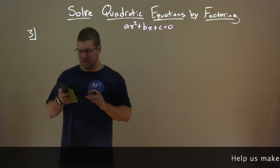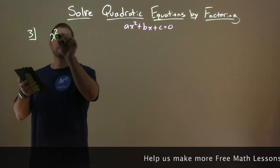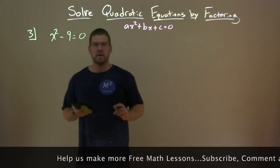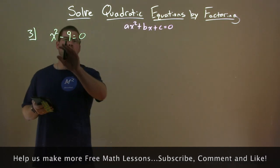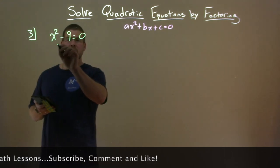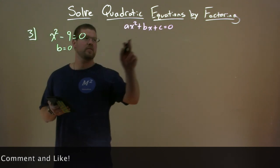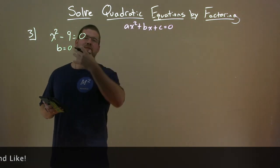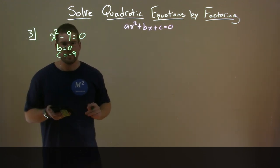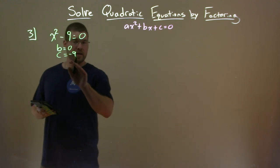Let's solve another one using the zero product property. We have x squared minus 9 equals zero. What's tricky here is the b value isn't written — our b is actually equal to zero, because zero times x would just be zero. Our c value is negative 9. Just like before, let's find two numbers that multiply to be negative 9.